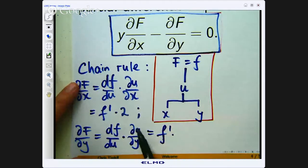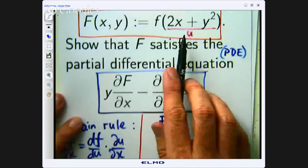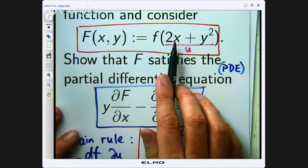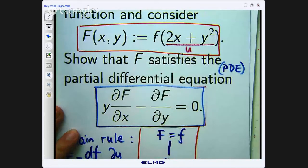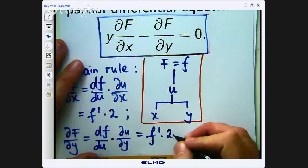f' dash du/dy. Well let's go up here. u equals 2x plus y squared. So differentiate everything in here with respect to y by holding the x is fixed. So that will go to 0. That will become 2y. Okay, so du/dy is going to be 2y.